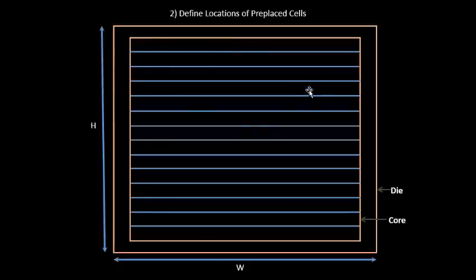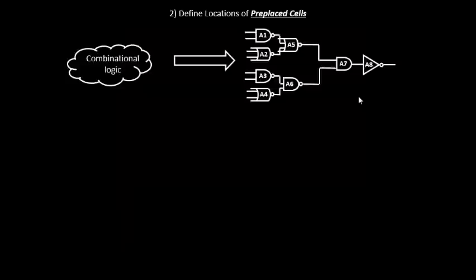The next step in the physical design flow or floor planning is to define the locations of pre-placed cells. Before we do that, let's get a brief overview of what pre-placed cells actually mean. We'll take a combinational logic example — this combinational logic does some function, maybe it's a memory, a multiplier, a complex MUX, or a complex clock divider.